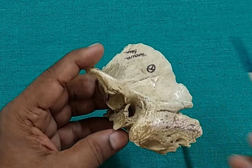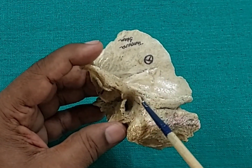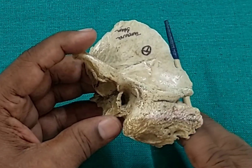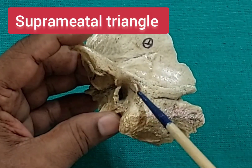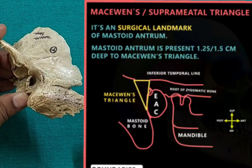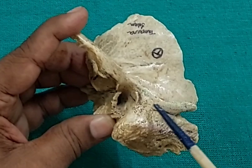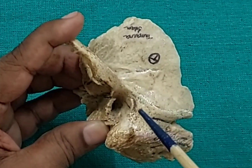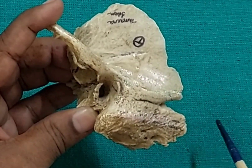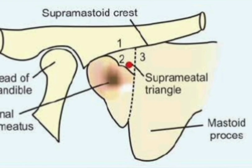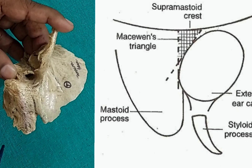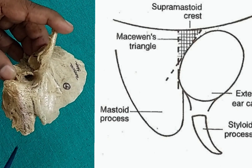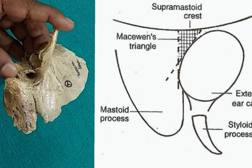There is a small depression behind the external acoustic meatus called the suprameatal triangle, or MacEwen's triangle. There is a bony projection anterior to the suprameatal triangle called the suprameatal spine. The importance of this suprameatal triangle is that it is an important surface landmark because it marks the position of the mastoid antrum, which is medial to the triangle at a depth of about 1.25 centimeters in the adult. But in the newborn it is about 2 millimeters from the surface, and the depth increases by 1 millimeter per year until the adult position is reached.